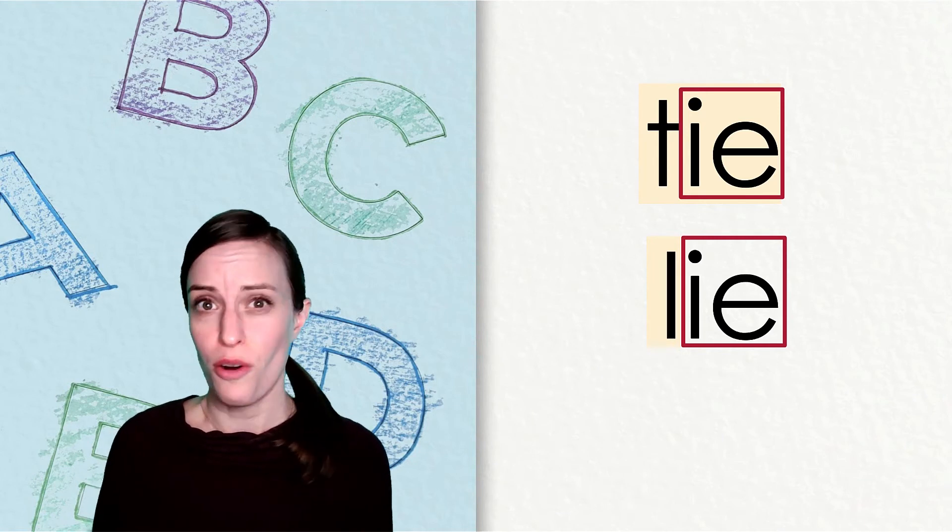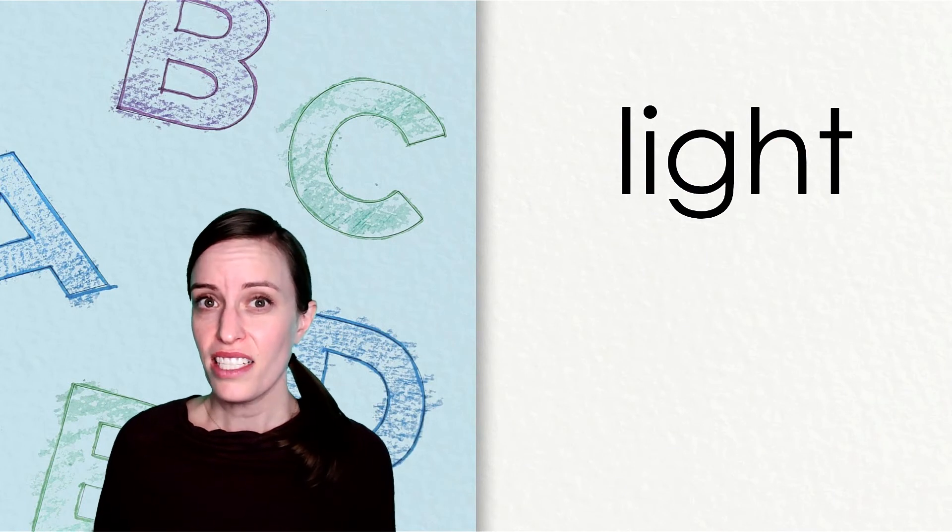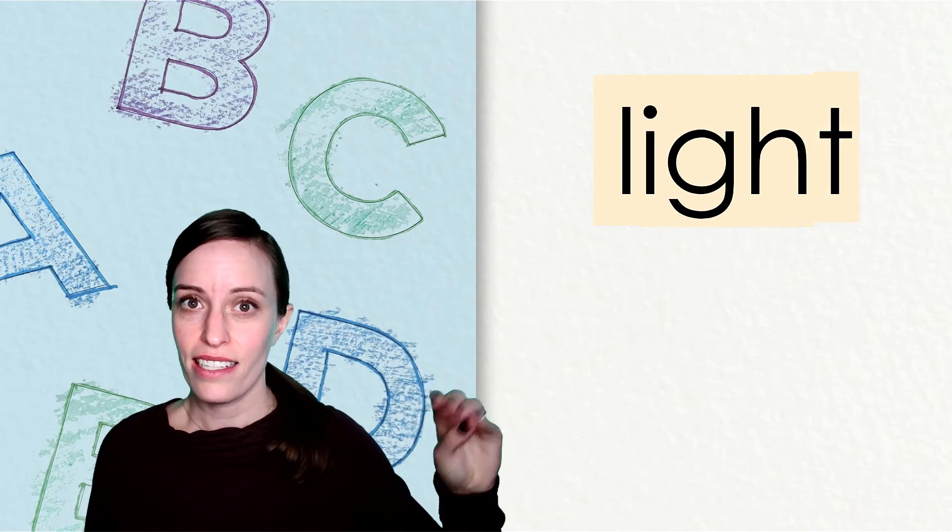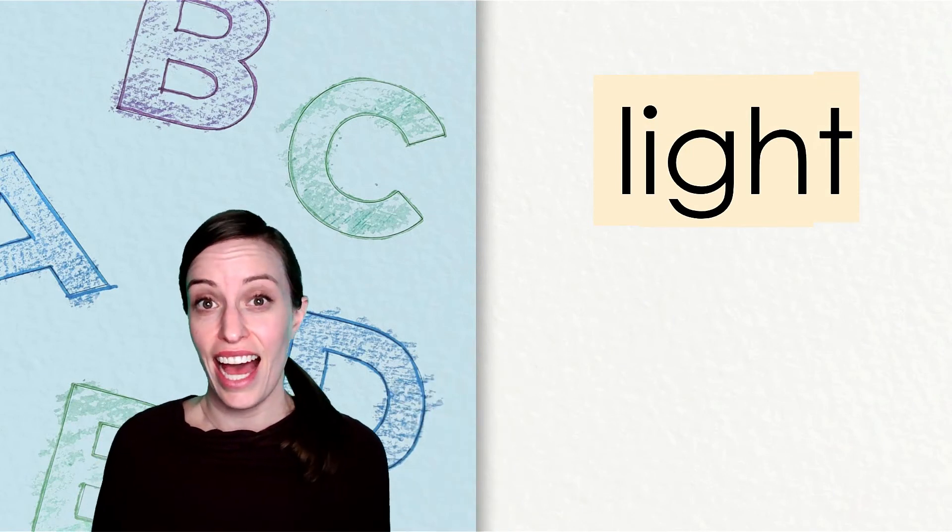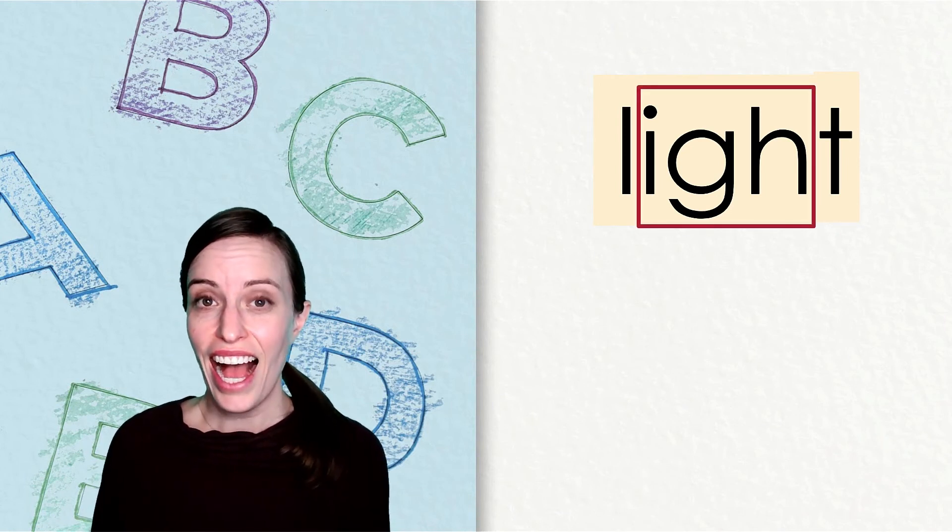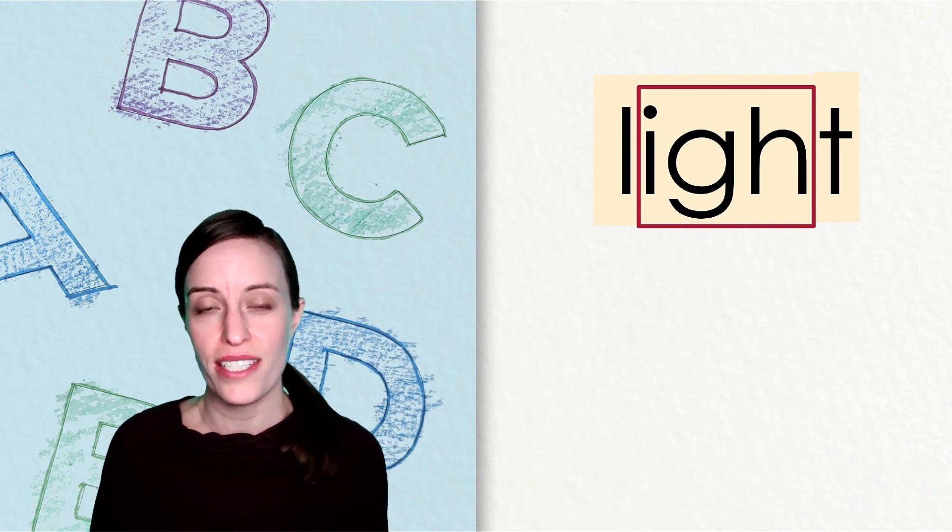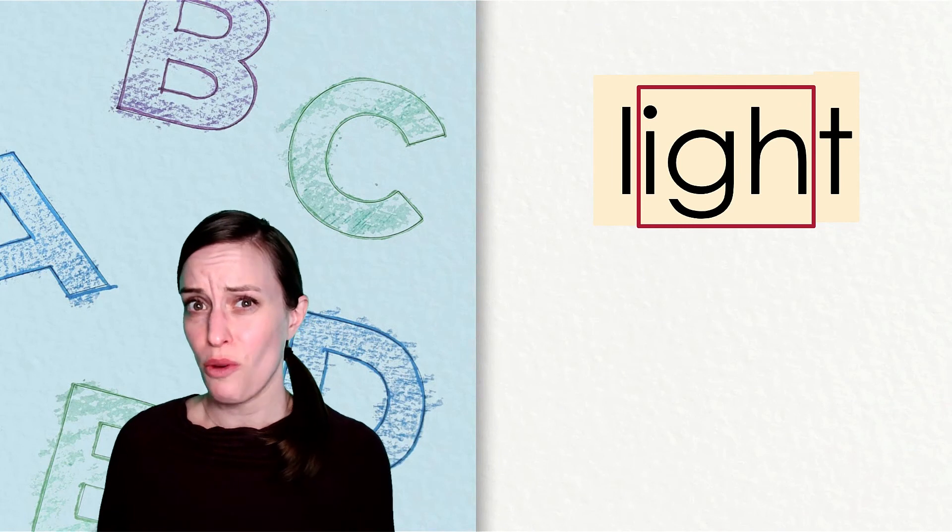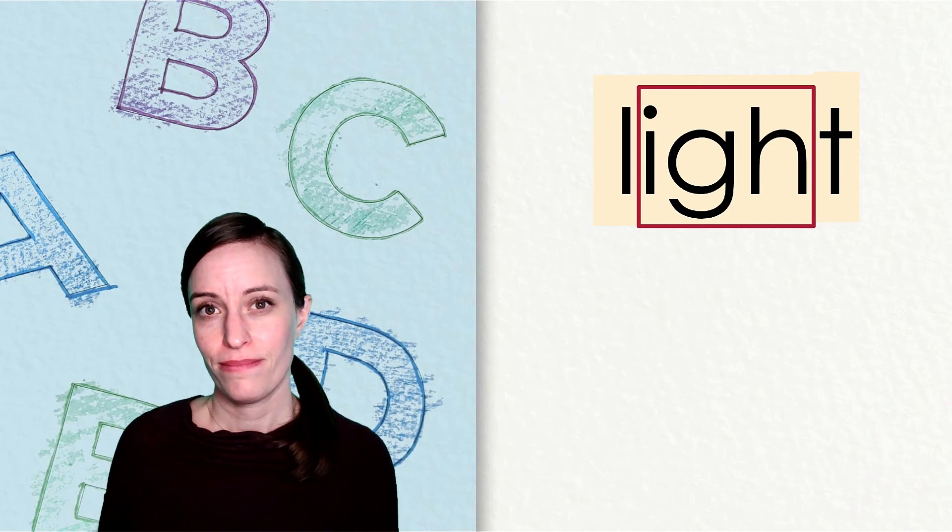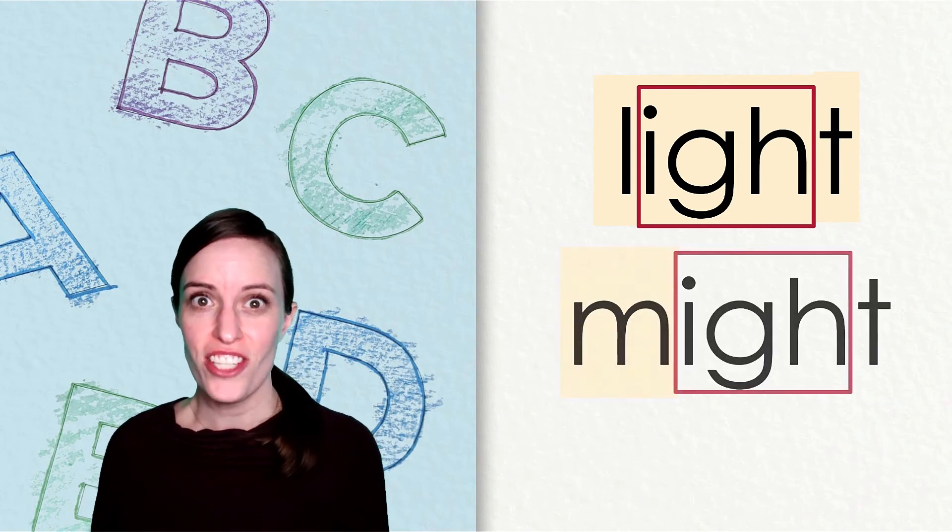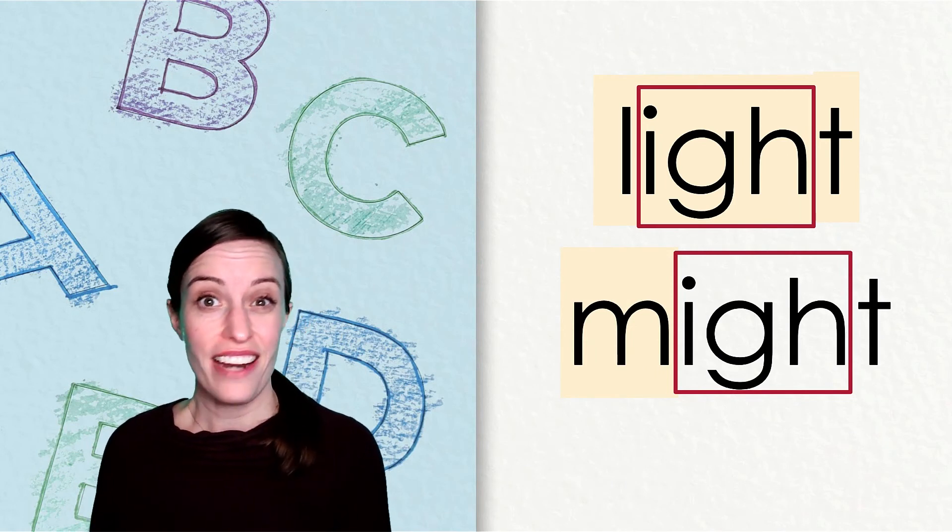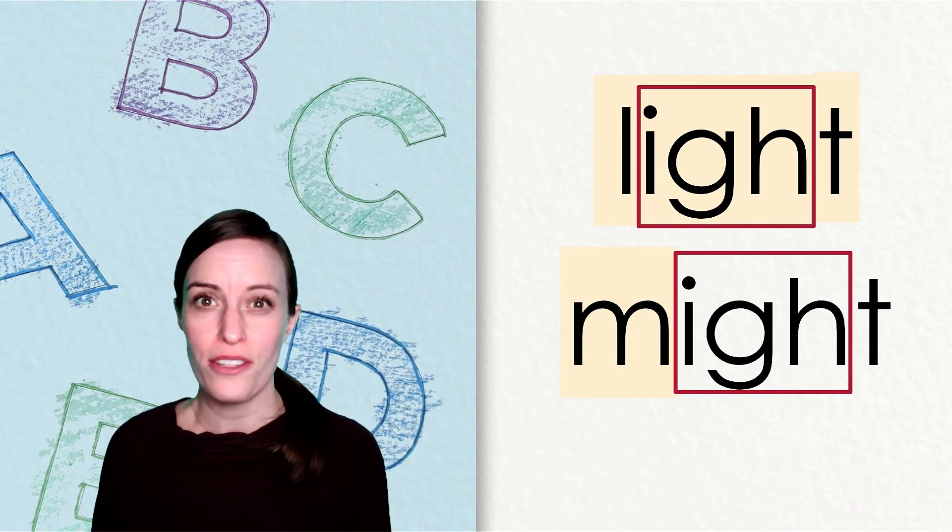Let's check out another word with the long i sound. This word is light. Light. Can you find the letters that say i in the word light? The igh work together to say i. How might we change the word light to the word might? We have to change that initial letter again. We change the l to an m. The letters igh still work together to say i.